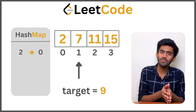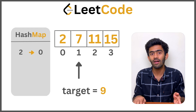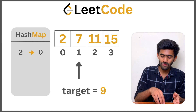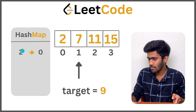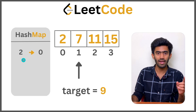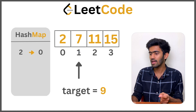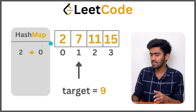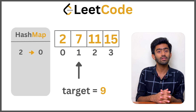Repeating the process for 7: what value should be added to 7 to get the target of 9? That's 2. So we check whether 2 is already present in the hash map. We go to the hash map — yes, we have a 2! We've got our answer. So 7 and 2 are the answer. We have the index of 7 as the current pointer, and the index of 2 can be retrieved from the value stored in the hash map. With these two values, 1 and 0 are returned as our answer.